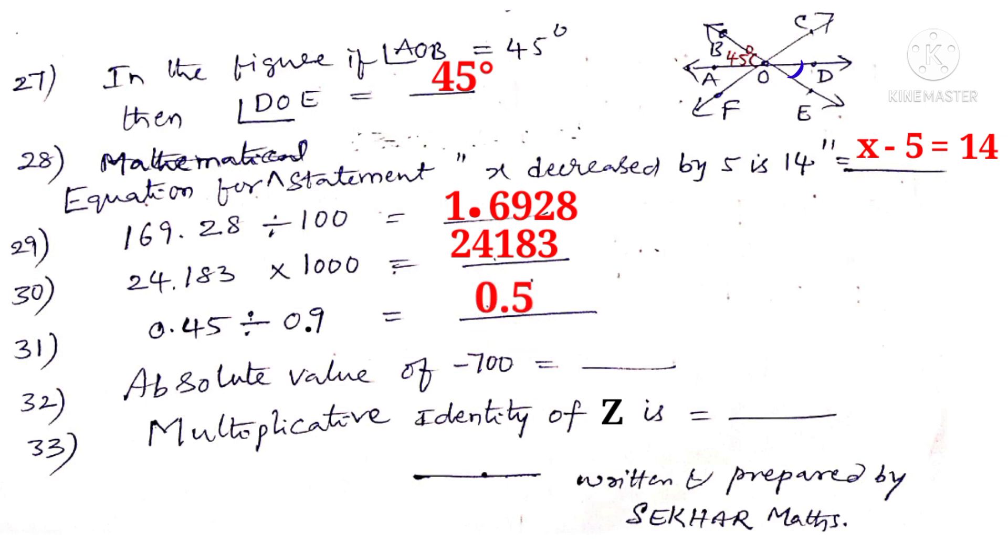Now 32. Absolute value of minus 700. That is modulus of minus 700 is always equal to positive number. So positive number 700. So answer is 700. Now 33. Multiplicative identity of Z is. It is equal to 1.